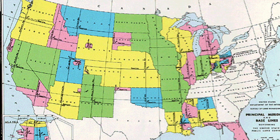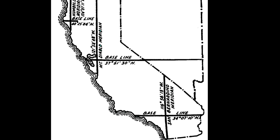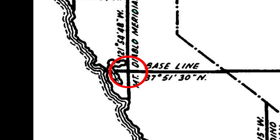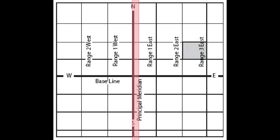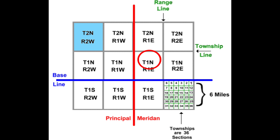The location of an area starts at a principal meridian. There are 37 meridians in the US and each one is named. California has three principal meridians: the Humboldt, the Mount Diablo, and the San Bernardino — all established between 1851 and 1853. We will be using the Mount Diablo base and meridian in this video. Your baselines run east and west, and the meridians run north and south. From the baseline you have townships running north and south, and from the meridian line you have ranges running east and west.